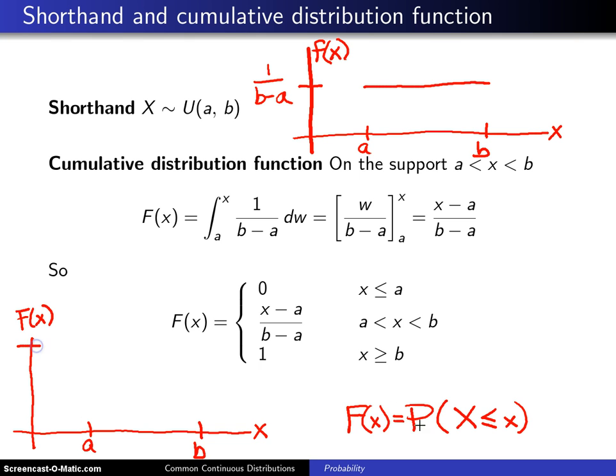And we know because the CDF is a probability, it must lie between 0 and 1. And if you take any value little x that is less than a, the probability of being less than that value is 0.